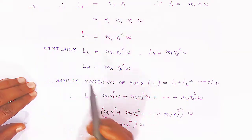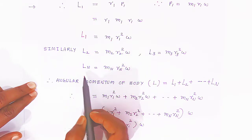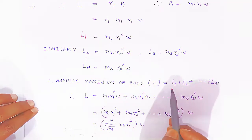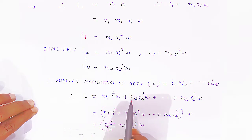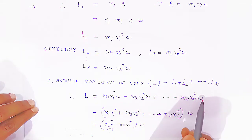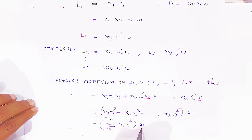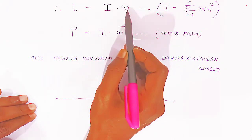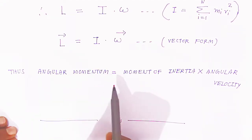Similarly, we can find the angular momentum of the second particle: M2·R2²·ω, the third particle, and up to the nth particle: Ln = Mn·Rn²·ω. The angular momentum of the whole body equals the sum: L1 + L2 + ... + Ln = M1·R1²·ω + M2·R2²·ω + ... + Mn·Rn²·ω. Taking omega common: L = (summation of Mi·Ri² from i=1 to n)·ω. Since the summation of Mi·Ri² is the moment of inertia I, the angular momentum L = I·ω. So angular momentum equals moment of inertia into angular velocity.